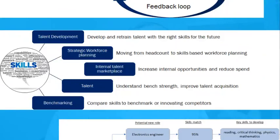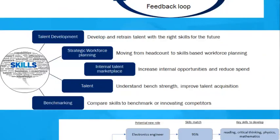At a macro strategic level, skills data is the absolute gold mine. We can think about what are the critical skills for the organization — either to deliver the strategy or to provide competitive advantage going forward. We can also think about not developing skills we won't need in the future, whether we're moving out of industries, ending product lines, or because some skills are becoming redundant due to technology. Skills have a half-life, and that half-life is shortening — the skills you learn today will be useful for less time because new skills and new technology are always coming in.